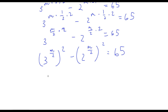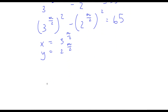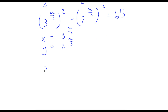Now I'm going to set x equal to 3 to the power of m over 2, and set y equal to 2 to the power of m over 2. So if we plug in x and y into our equation, we get x squared minus y squared is equal to 65.